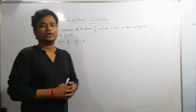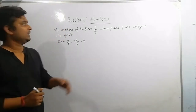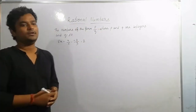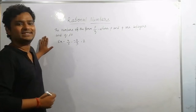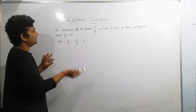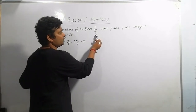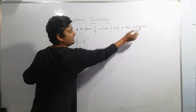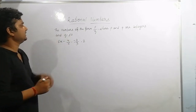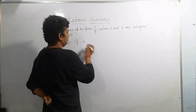Hello students, today we are going to start with Class 7 Maths. The topic is rational numbers. First of all, I would like to tell you what a rational number is. A rational number is defined as a number of the form P by Q, where P and Q are integers and Q is not equal to zero. This is called a rational number.